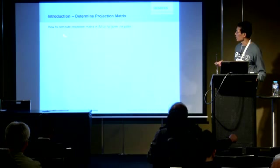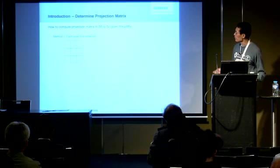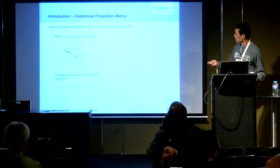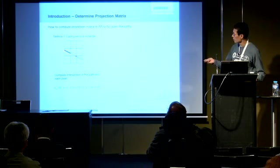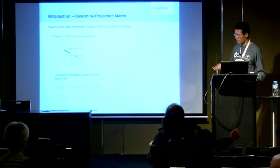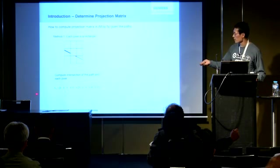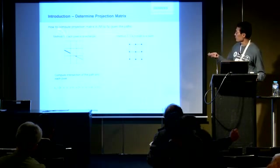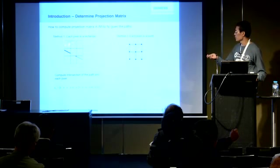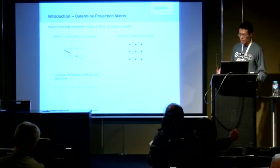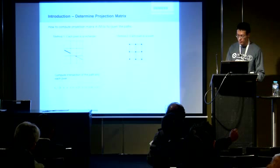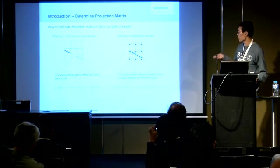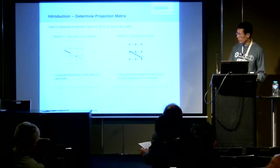So how can we determine the projection matrix given the path? We have two methods. In the first method, we treat each pixel as a rectangle and compute the intersection between a path and the rectangle. The pixel with the most intersection gets a higher corresponding weight. The sum of each row should equal one because we're talking about average values. In the second method, we treat each pixel as a point — converting from the first method by treating the centroid of a rectangle as a point — and we uniformly sample many points along the path, compute the bilinear weight of each pixel for every sample point, and sum them all up to get the weight for every pixel. In this paper, we use the second approach.